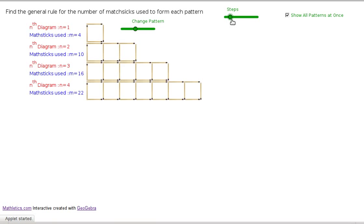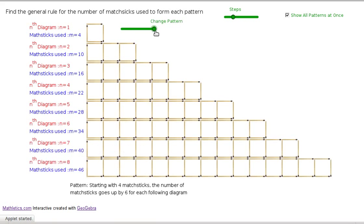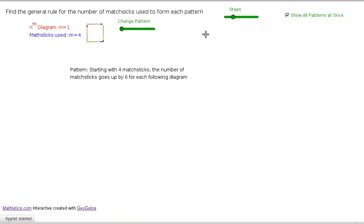So that's the next step, is to write down the rule. Starting with four matchsticks, the number of matchsticks goes up by 6 for each following diagram. And that happens for all of the patterns that we've got. So next thing we're going to do is put all that information into a table, because it makes it a bit clearer. We've got matchstick diagram number up here, the diagram number is 1, and the matchsticks used in the next line.